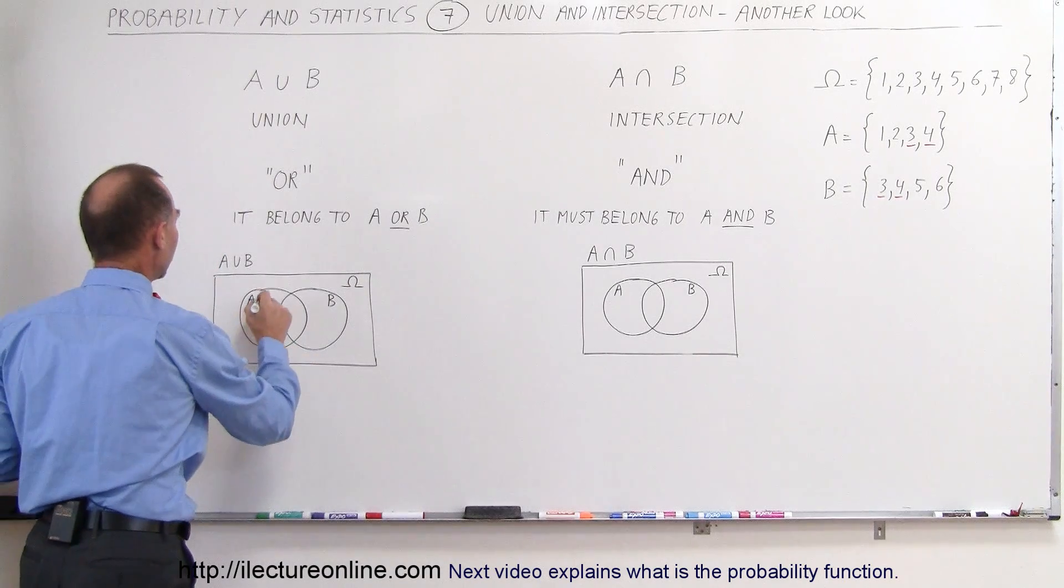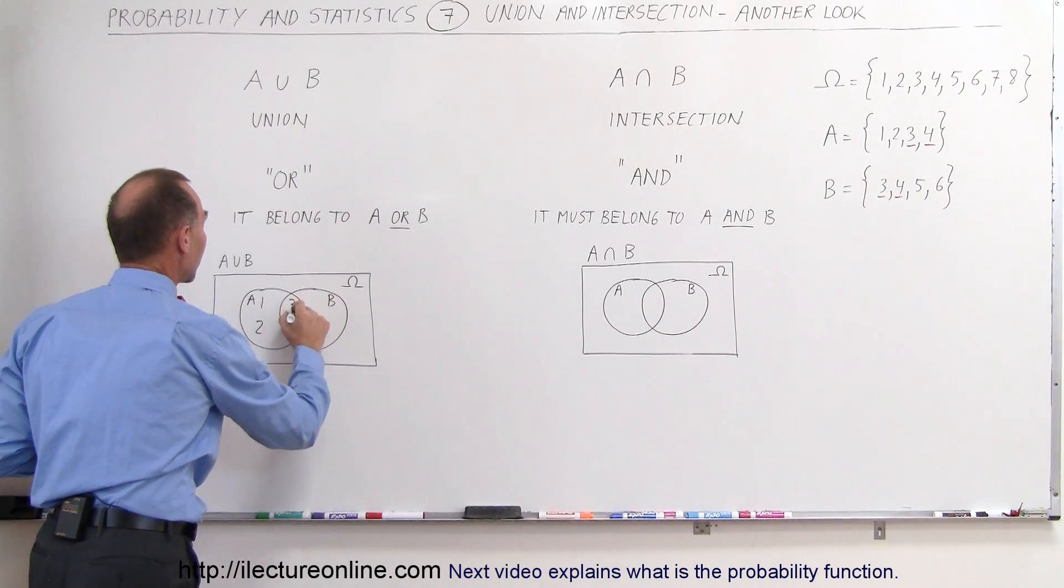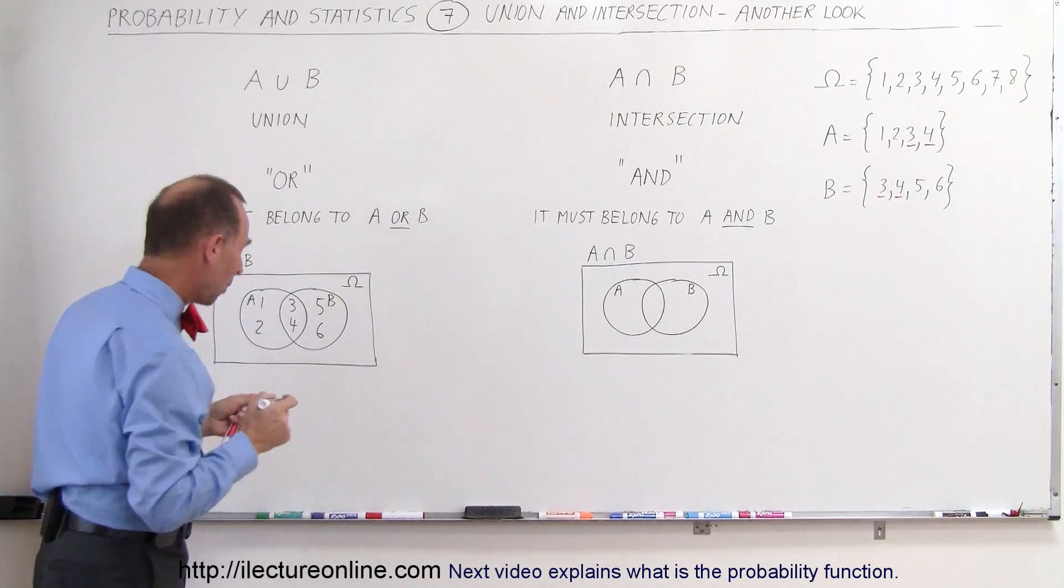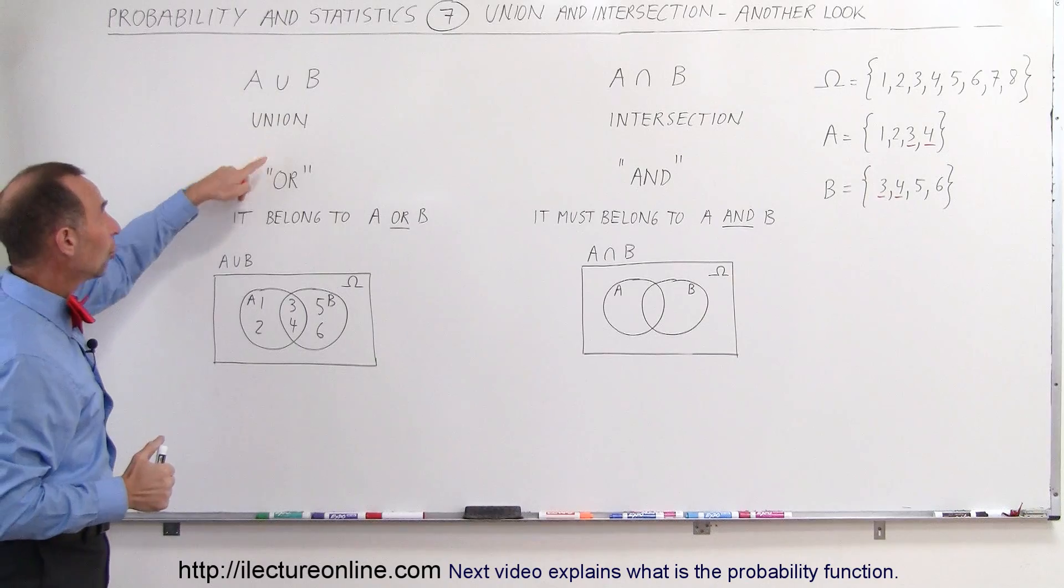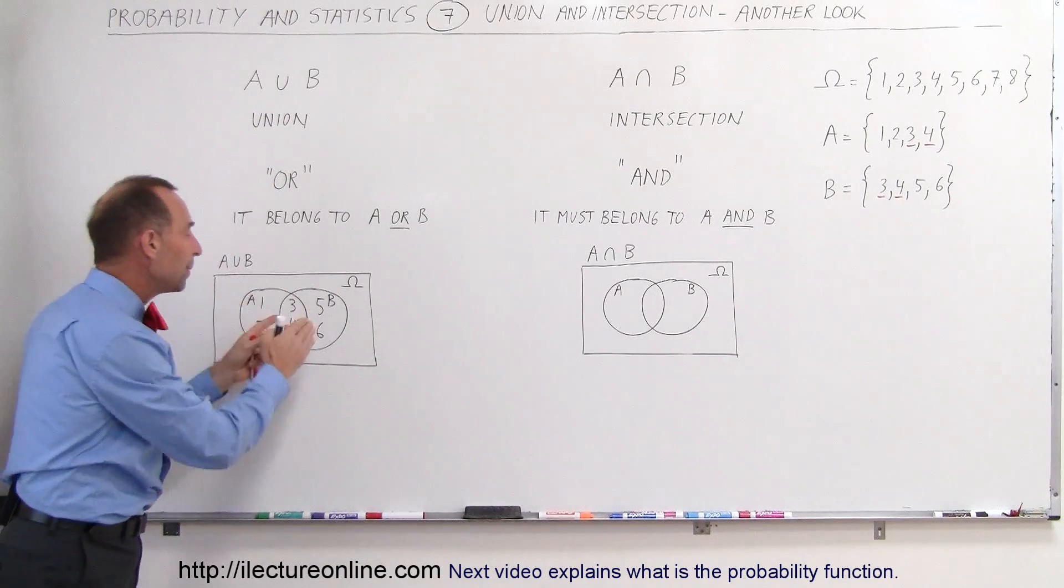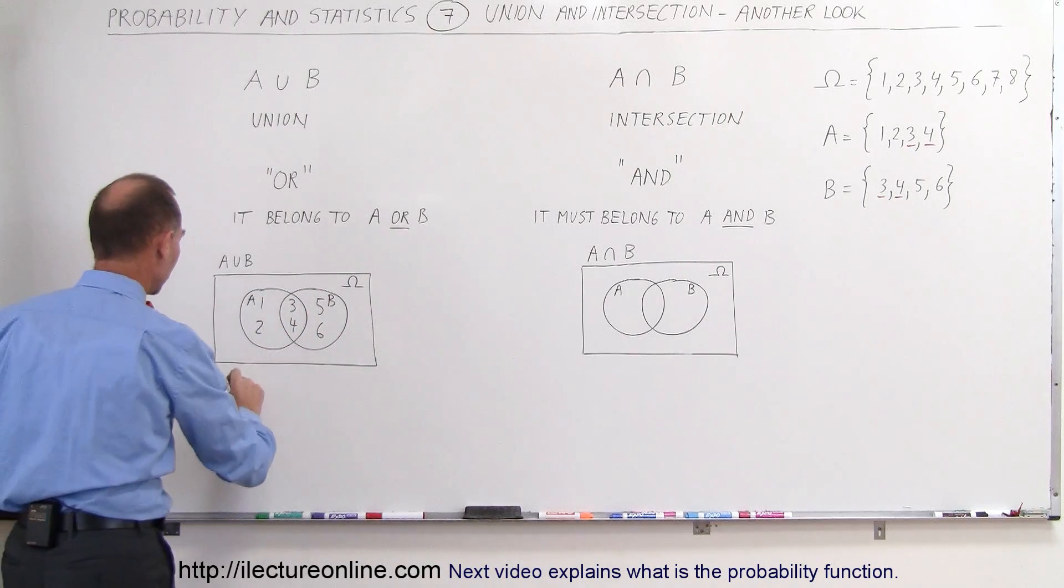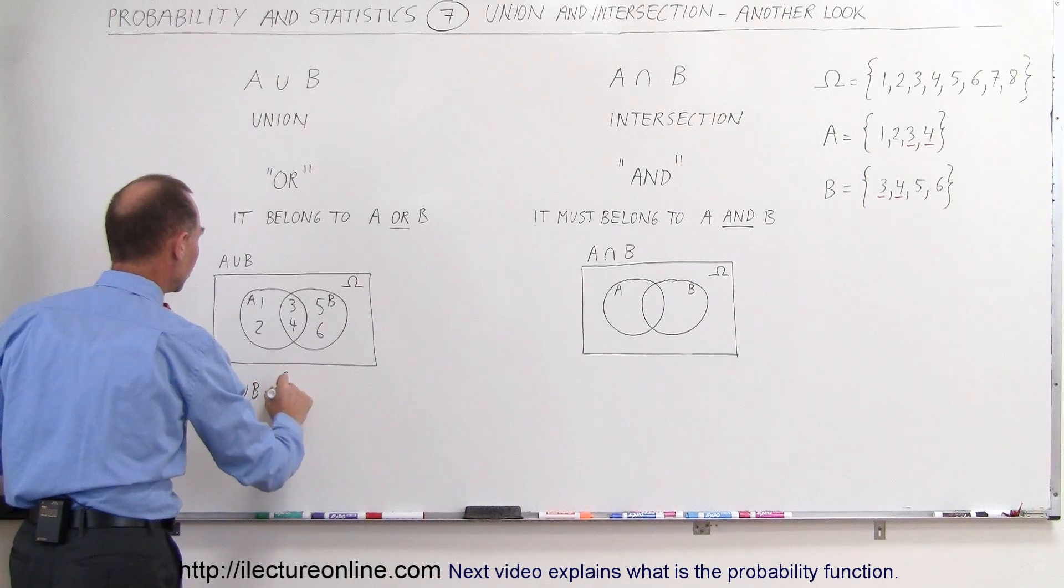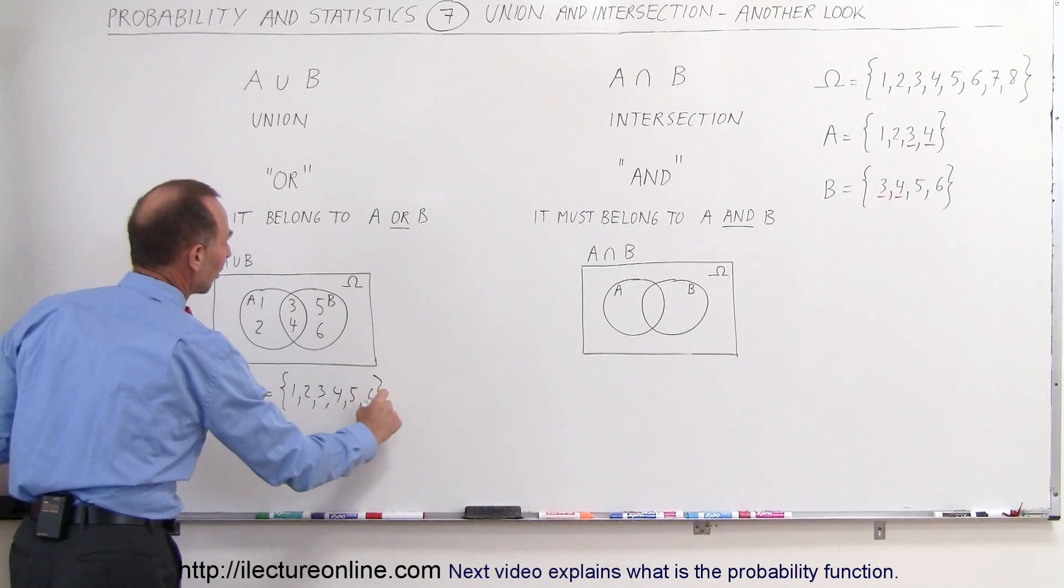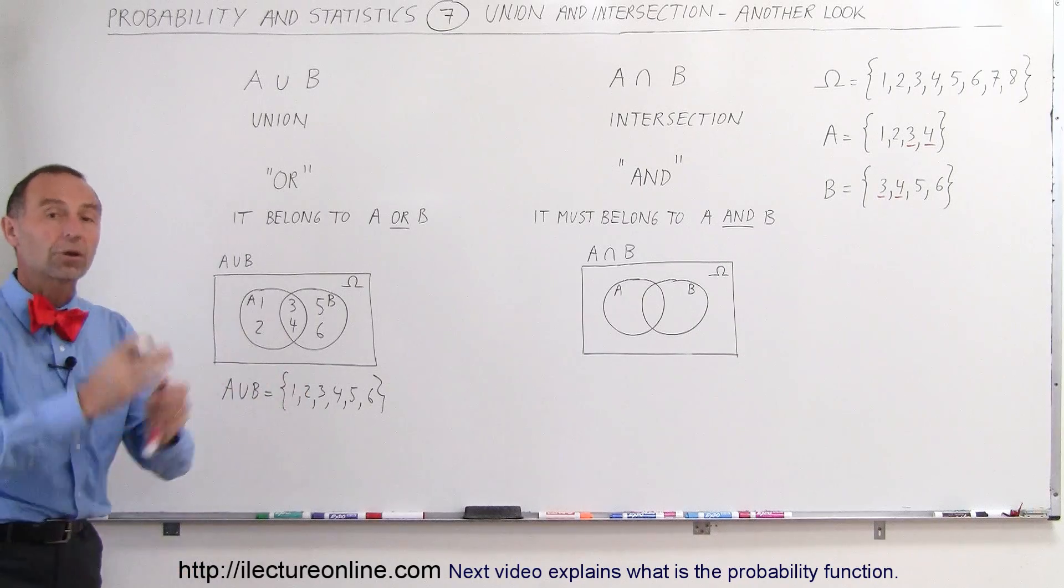With A, we have the numbers 1 and 2, which are not common to B. The numbers 3 and 4 are common to B, and the numbers 5 and 6 are only part of B and not part of A. But in the union, or the word or, all the elements that belong to either A or B are part of the set, which means the whole thing is part of A union B, so we know that A union B is equal to the elements 1, 2, 3, 4, 5, and 6. So the best way to think of it is, does it belong to A or belongs to B? Then it's part of the union.